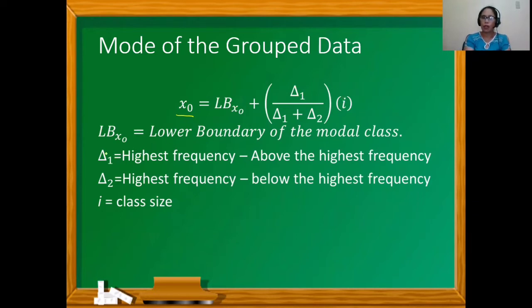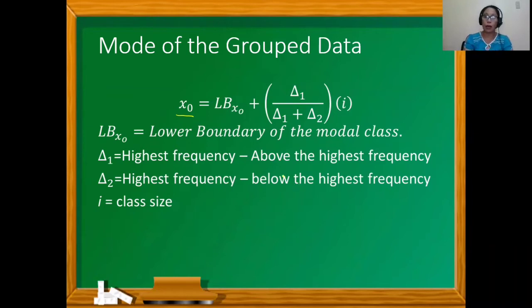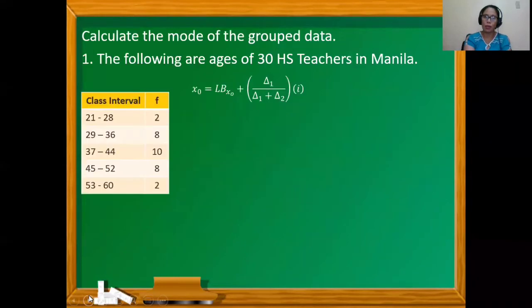Delta-one, or triangle-one, equals the highest frequency minus the frequency above the highest frequency. Delta-two equals the highest frequency minus the frequency below the highest frequency. The class size is represented by i. Now let's work on calculating the mode for a given set of data.